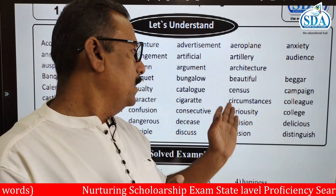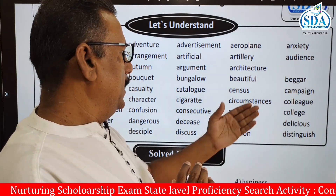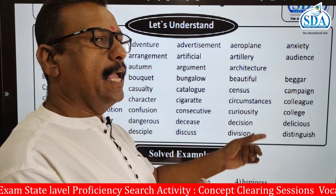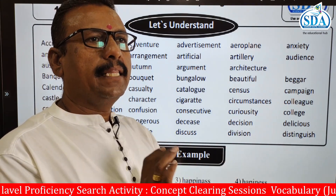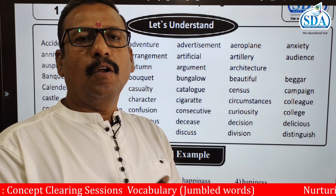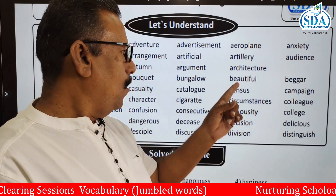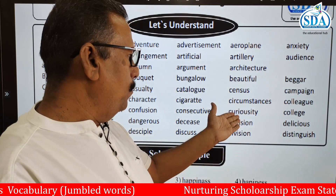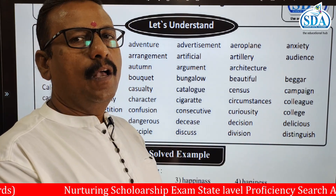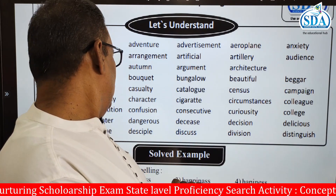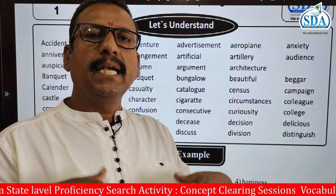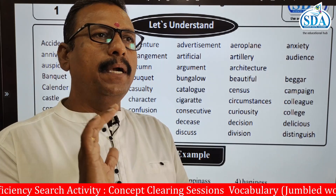You may pronounce it like 'census,' but that is wrong. Then college is there. Decision — S-I-O-N. There may be some jumbling in that spelling. You should properly understand and practice the vocabulary of these words. Division is there, distinguish is there, discuss is there — discuss has a double S. Dangerous is another example. From these examples, you will get a clear-cut idea regarding jumbled spellings.